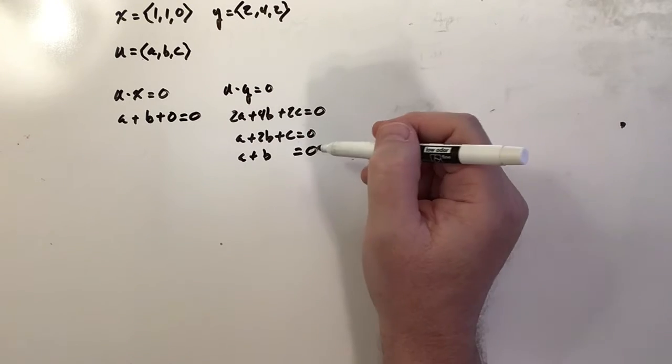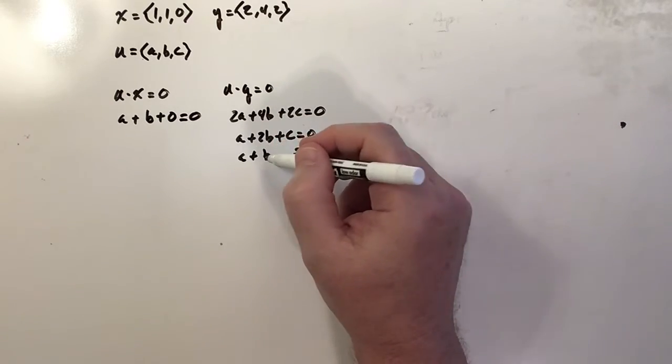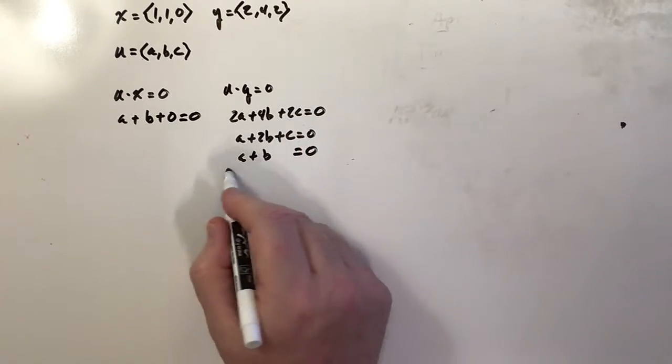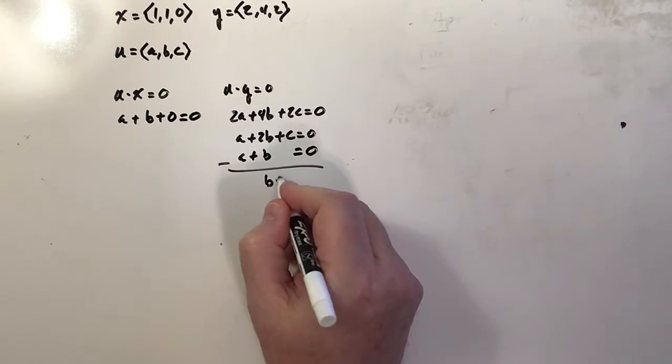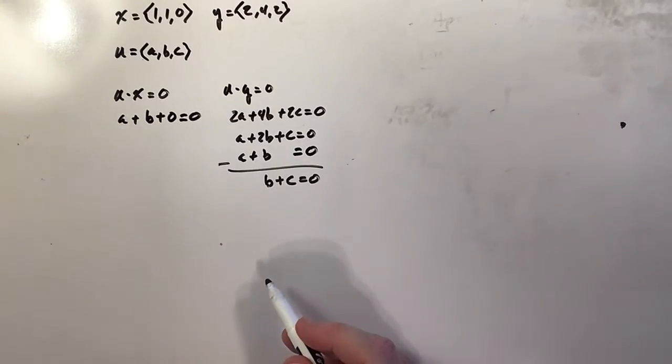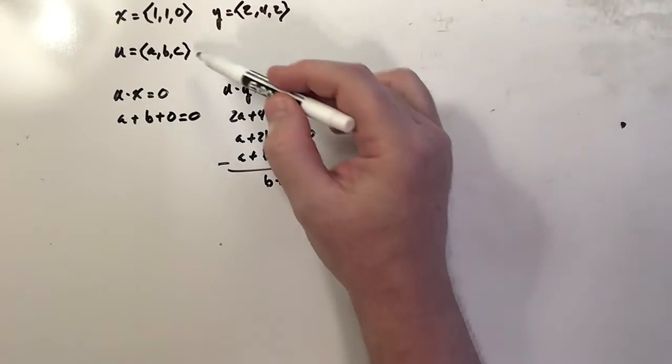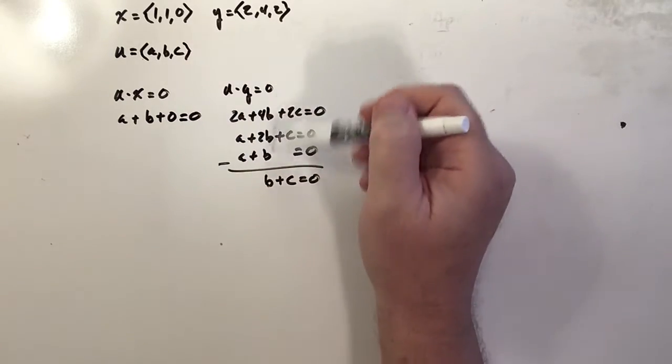So the first thing I'll do is use Gaussian elimination to subtract the second equation from the first. So if we take the first equation and subtract the second, we're going to get b plus c is equal to 0. Well, literally any combination of b and c adding up to 0 will form the two components of a vector whose third, as long as it fits in this system, will solve our problem of finding a perpendicular vector.